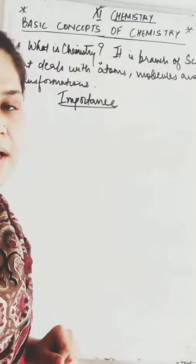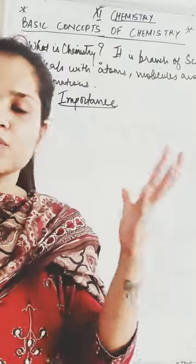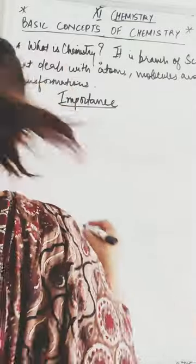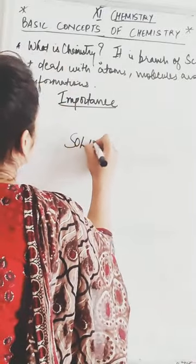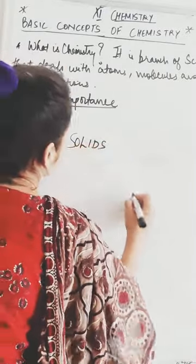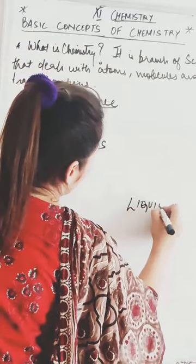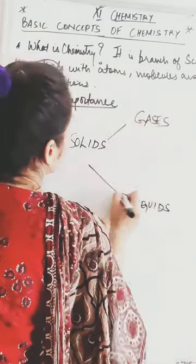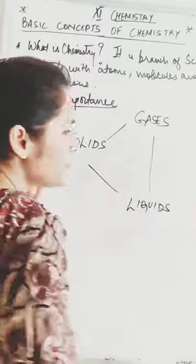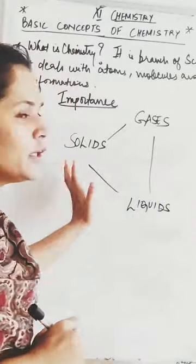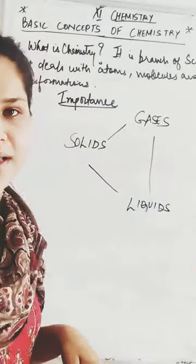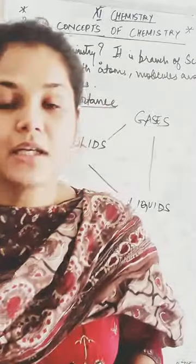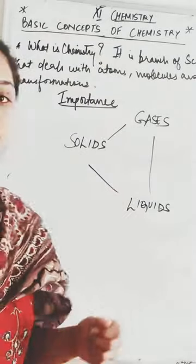A very unique property of solids, liquids, and gases is that they are interconvertible — you can convert from one state to another. For example, solid can be converted to liquid, and liquid can be converted to solid. Like ice — if I take ice, it can be converted into water.